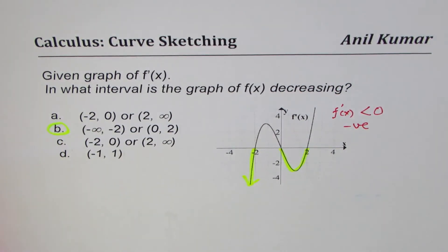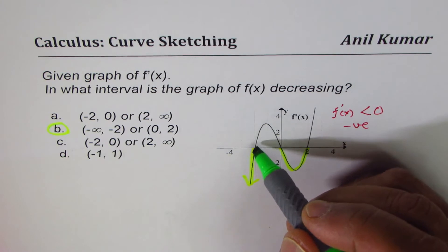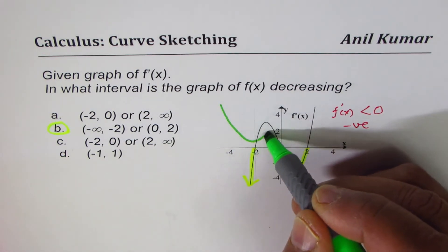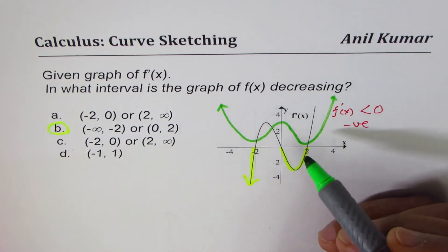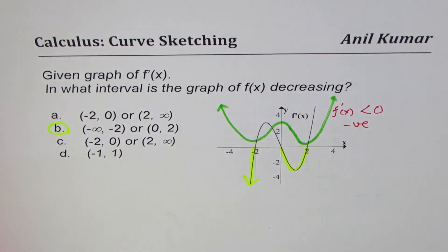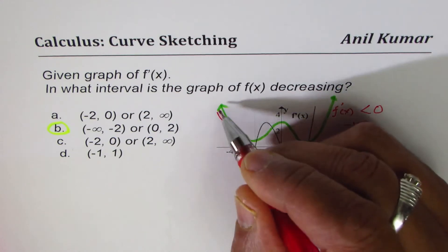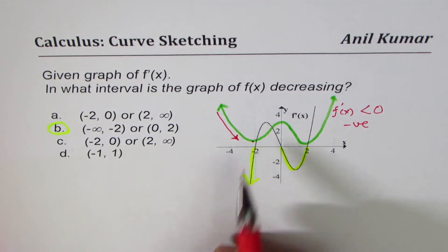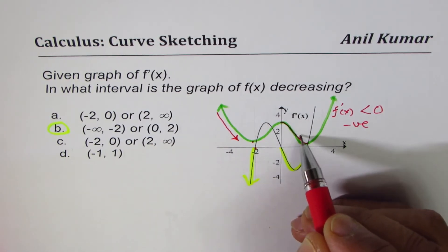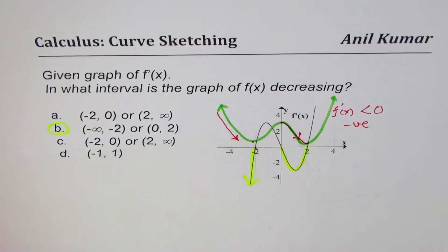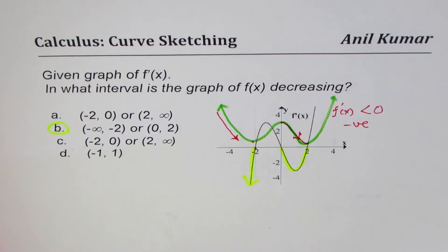If you recall the graph we sketched earlier, you can see very clearly that the function decreases in those intervals. Decreasing means you read from left to right — that's the turning point corresponding to the zero. The function is also decreasing here. That is the meaning of decreasing. The first derivative helps to figure out if the function is increasing or decreasing.